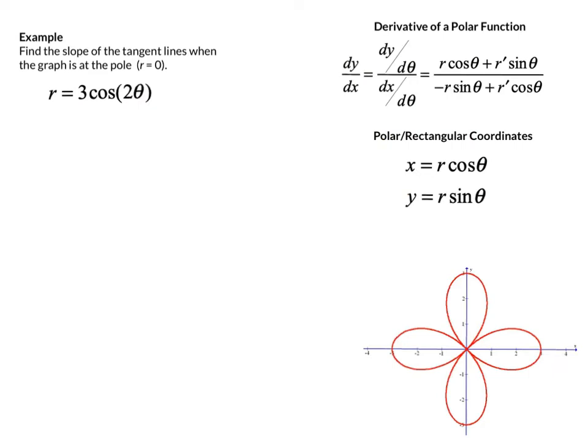Here we're taking a look at what's called a rose graph. It's a polar function in the form r equals 3 times the cosine of 2 theta. In these types of rose graphs, you're looking for sine or cosine of a multiple angle of theta. If it's an even multiple — here it's 2 — it's twice that number of petals on the rose. The sine and cosine are the same shape; it's just where their orientation is on the plane.